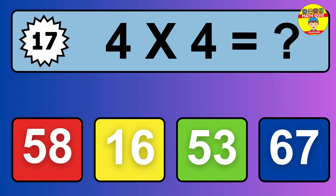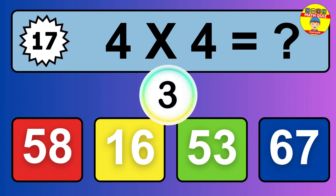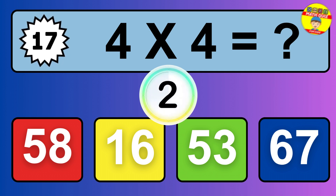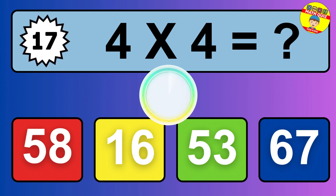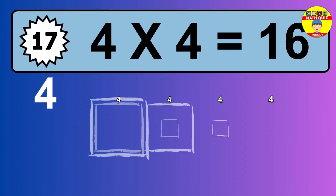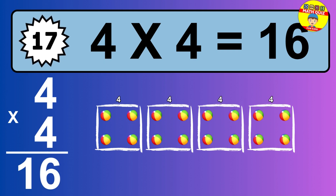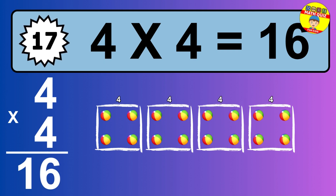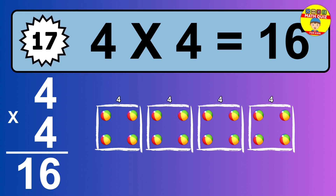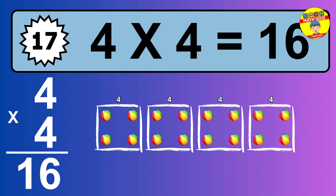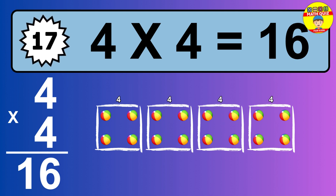Question 17. 4 times 4 equals what? To calculate, we have 4 groups with 4 balls each one. So how many balls do we have? 16 balls.